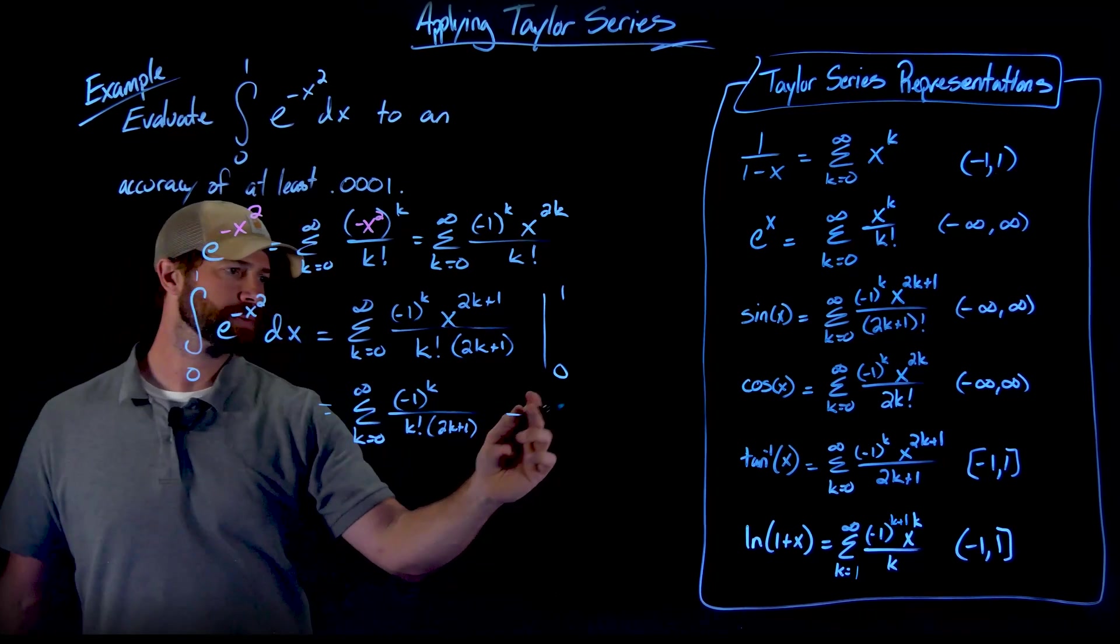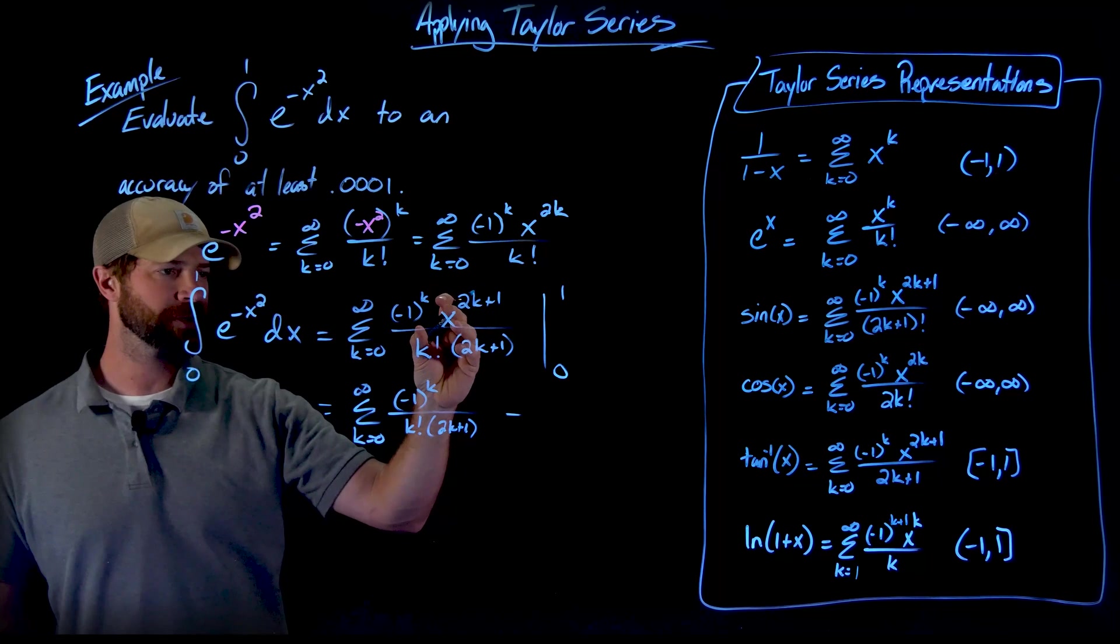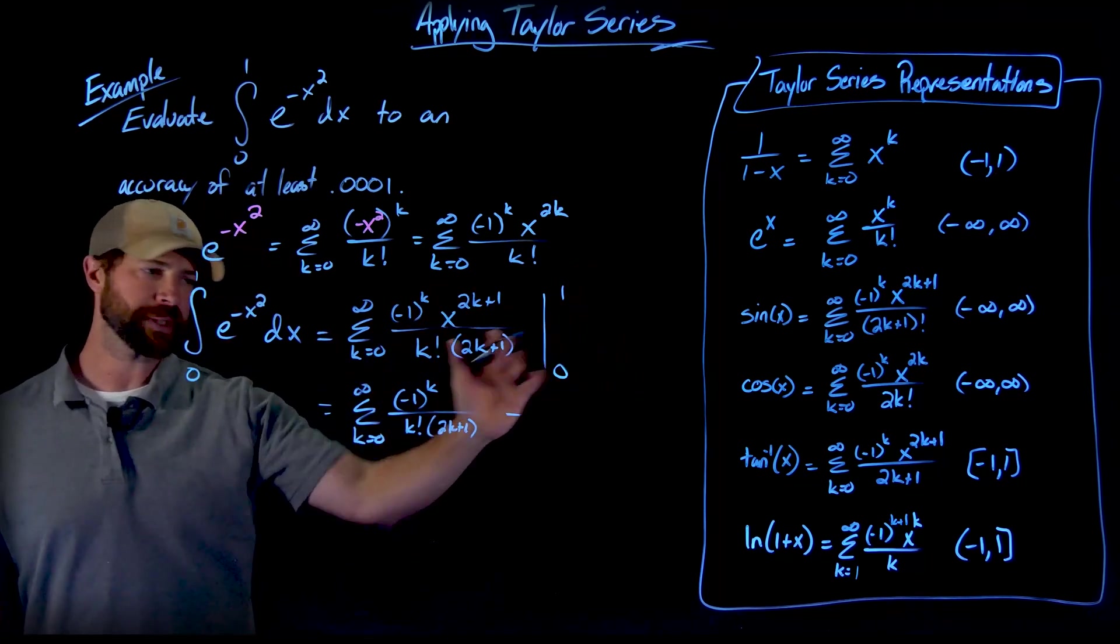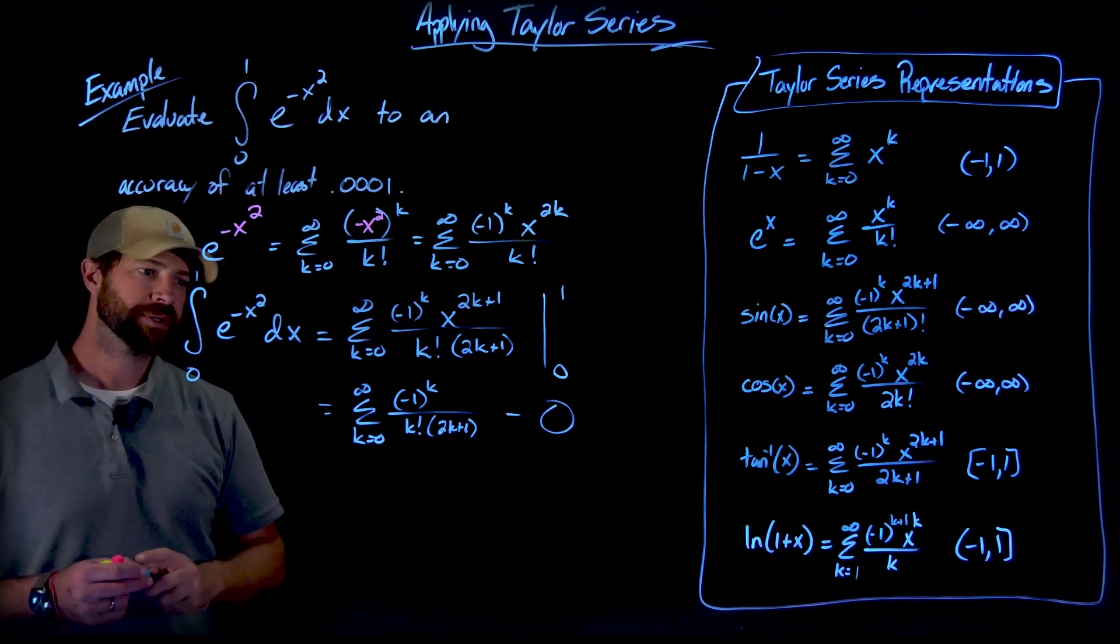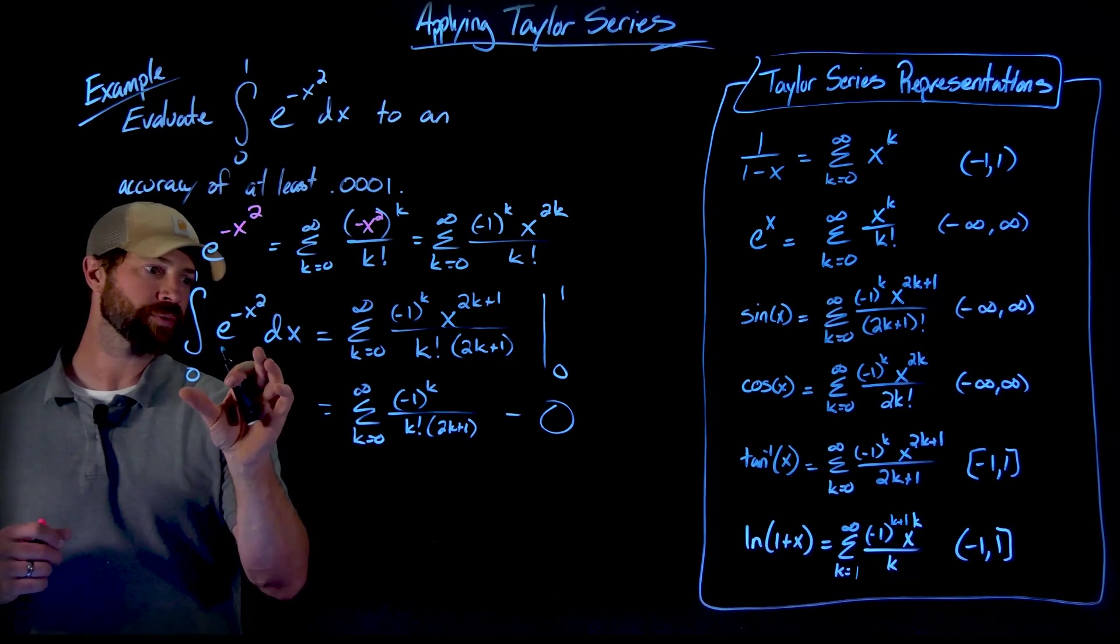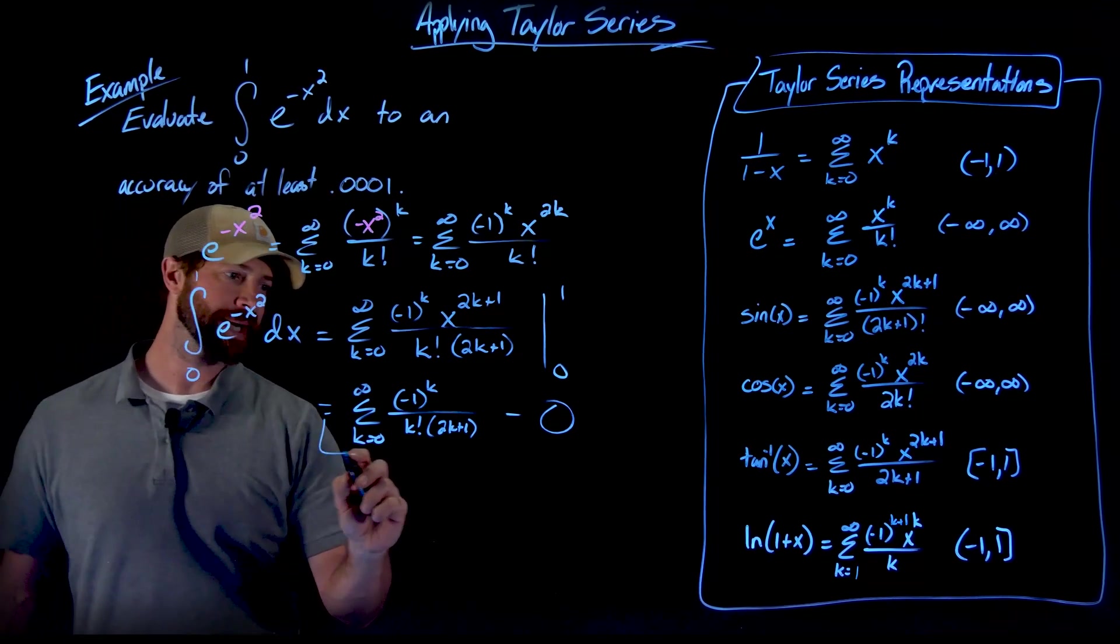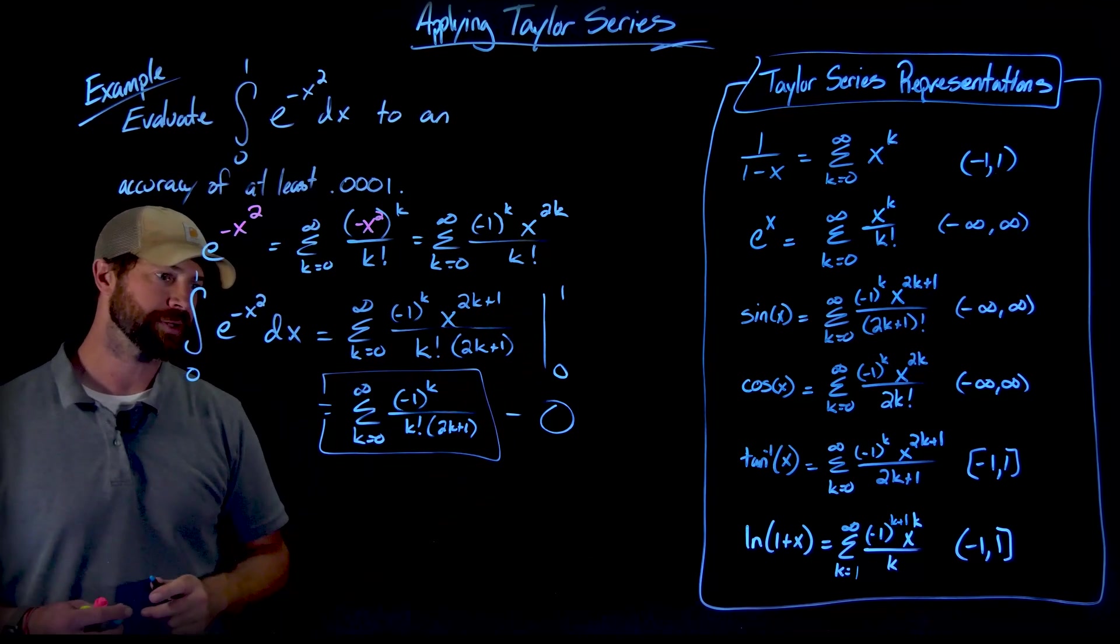And then minus when I plug in a 0 here. But if I plug in a 0 here for x, I have this factor of 0 and every term in this is going to go to 0. So plugging in 0 actually has no effect. So most simply is that this integral right here is represented by this series right here. Again, because the minus 0 doesn't do anything.